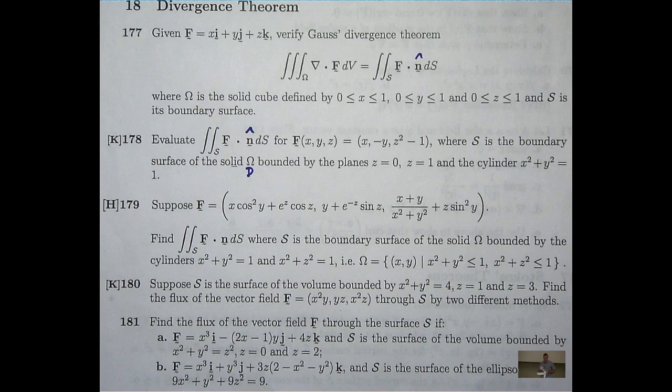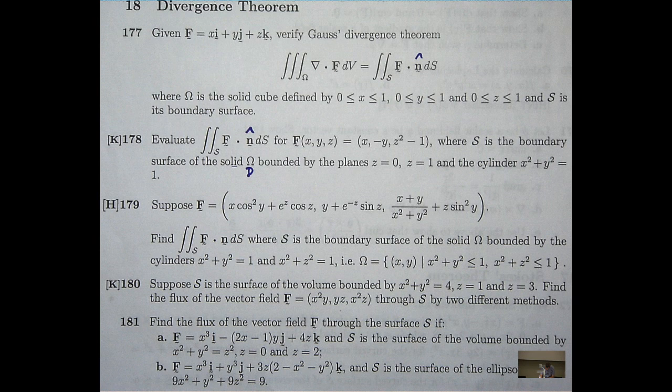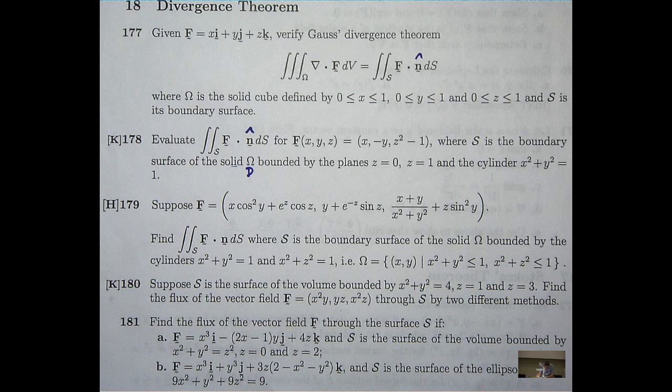So let's have a look at a couple of examples, and let's see how to apply this Gauss's Divergence Theorem. So let's look at 178. Here we've got a surface integral. Oh, by the way, I forgot to say it's n to the outward pointing unit normal throughout the application of this theorem. Evaluate this surface integral, where this is your vector function, and s is the boundary of the solid omega bounded by these two constant planes and this cylinder.